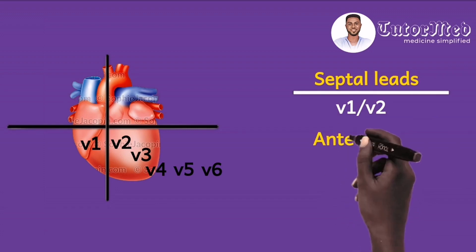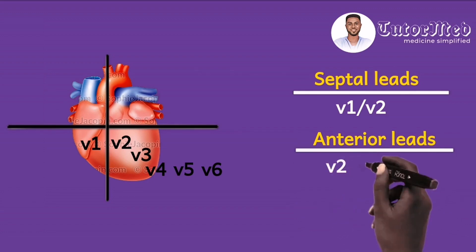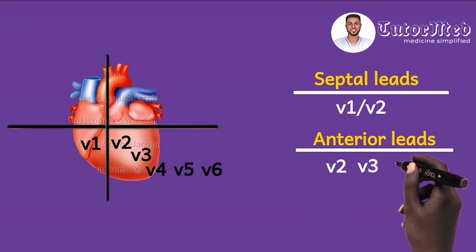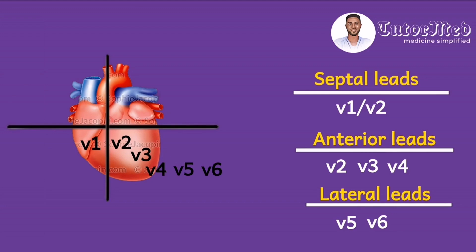V1 is certainly a septal lead. The anterior leads, which look at the anterior wall of the heart, are V2, V3, and V4. The lateral precordial leads are V5 and V6. Remember, leads 1 and AVL are also lateral limb leads, so in total we have four lateral leads: leads 1, AVL, V5, and V6.